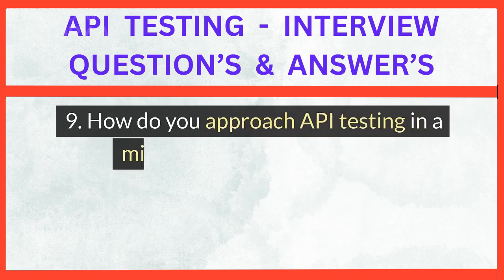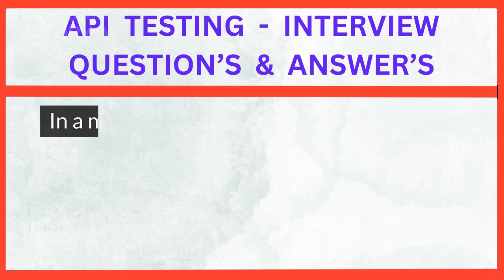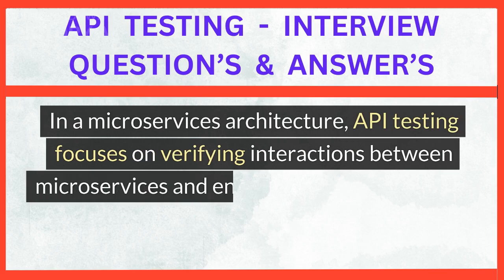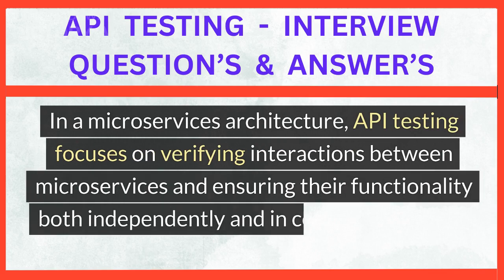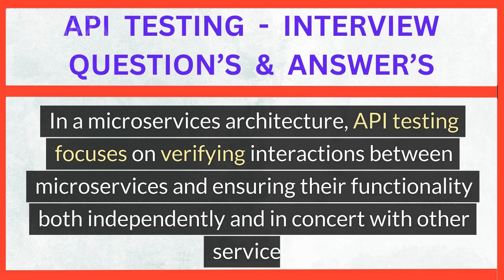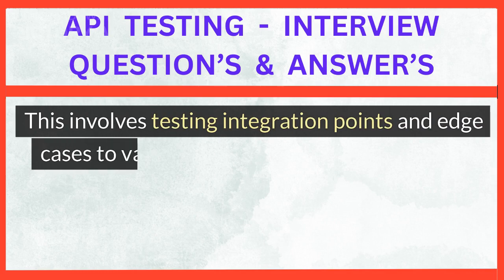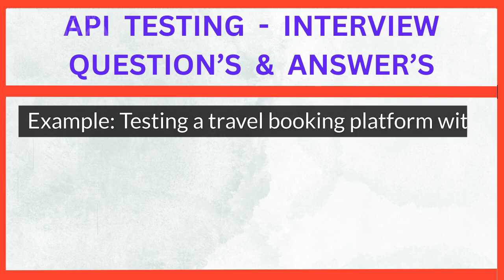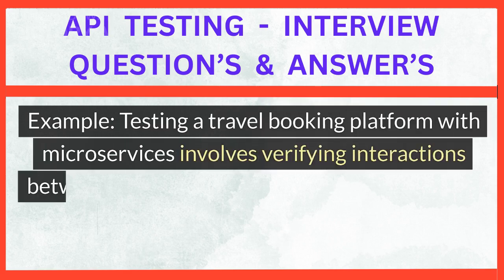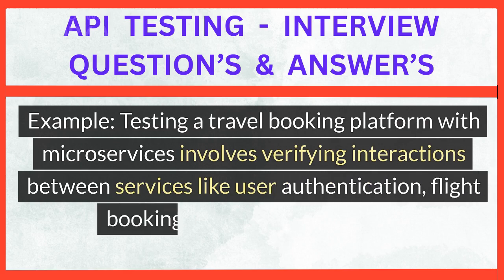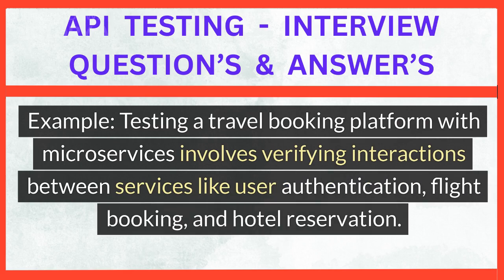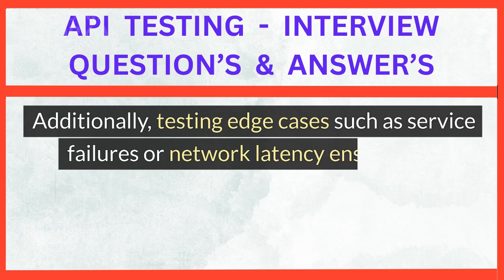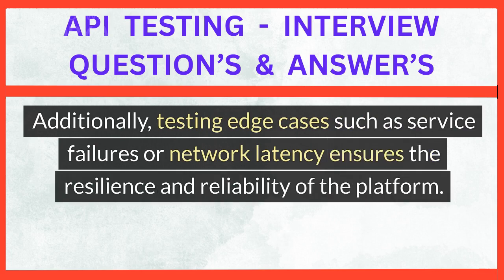How do you approach API testing in a microservices architecture? In a microservices architecture, API testing focuses on verifying interactions between microservices and ensuring their functionality both independently and in concert with other services. For example, testing a travel booking platform with microservices involves verifying interactions between services like user authentication, flight booking, and hotel reservation. Additionally, testing edge cases such as service failures or network latency ensures the resilience and reliability of the platform.